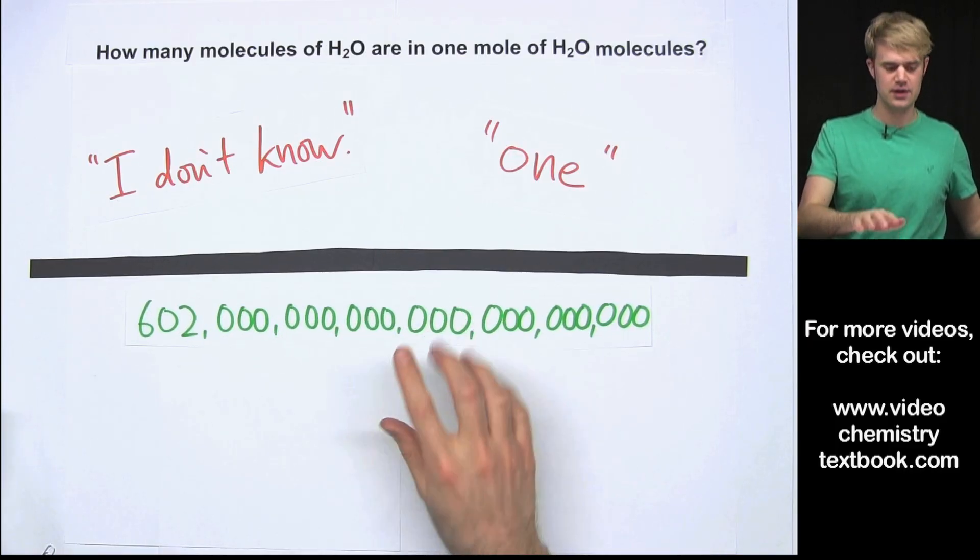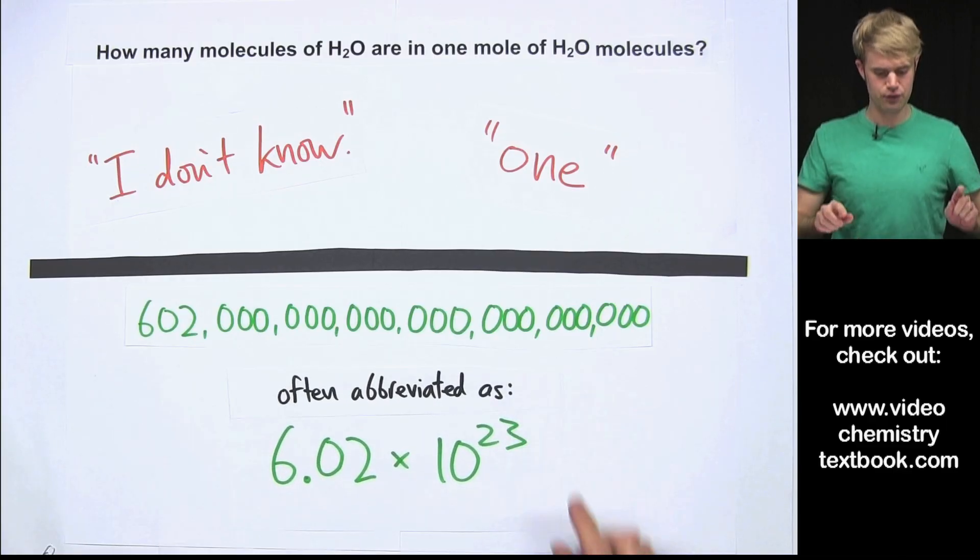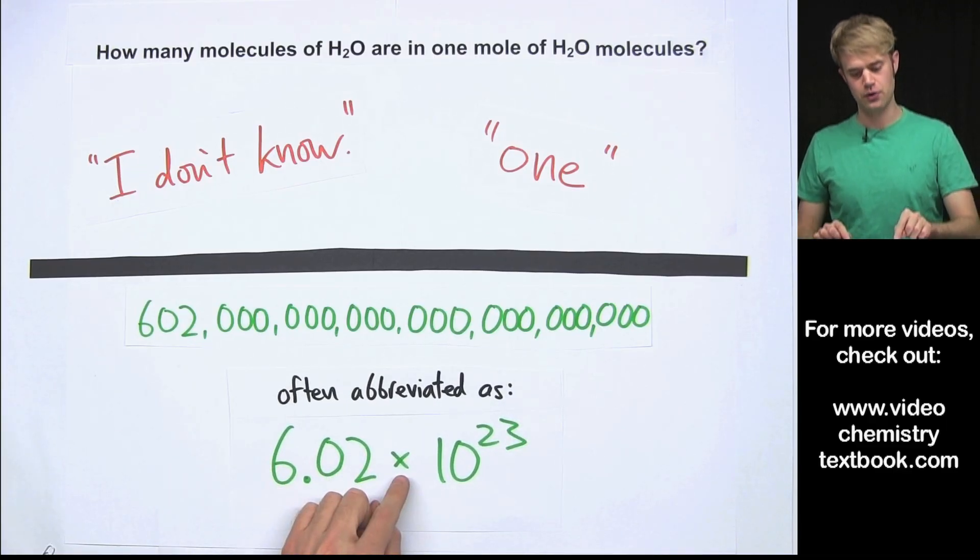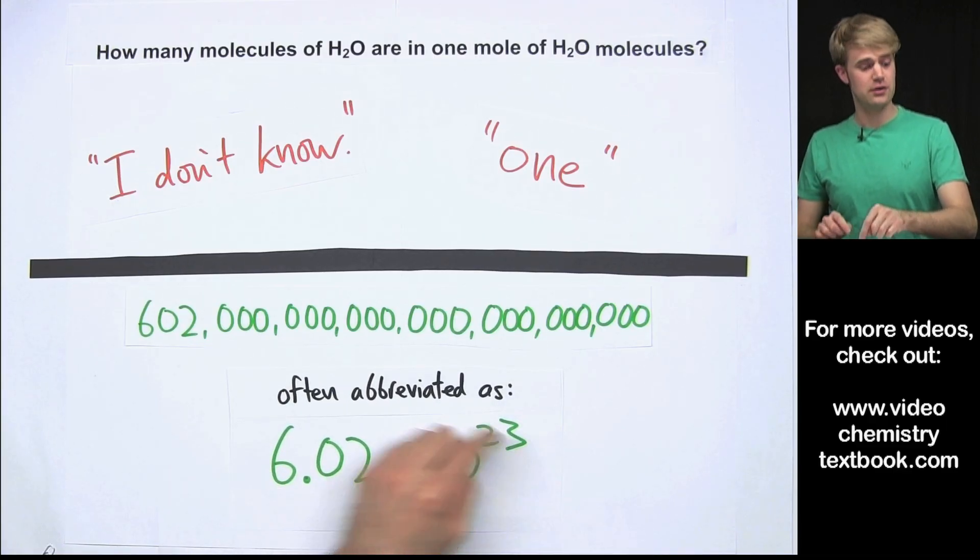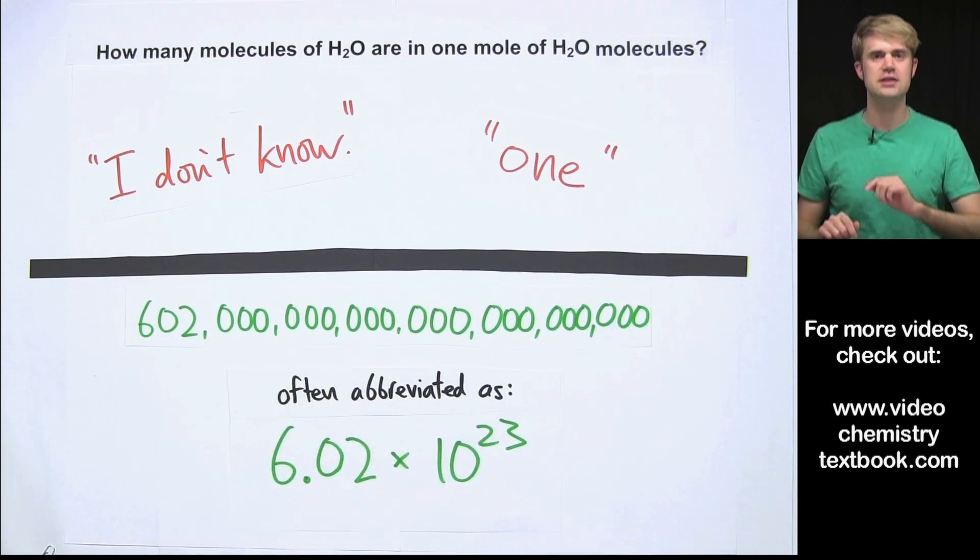This is often abbreviated - this number, 602 hexillion, is often abbreviated as 6.02 times 10 to the 23rd. It's just this number written in scientific notation.